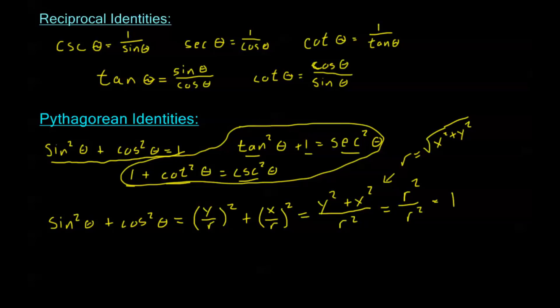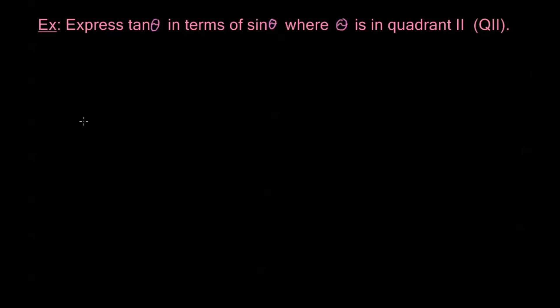Now how are we going to use these? Let's take a look at a couple of examples. Express tangent theta in terms of sine theta, where theta is in quadrant 2. We can use our Pythagorean identities. Note that cosine squared of theta equals 1 minus sine squared of theta — taking the first Pythagorean identity and subtracting sine squared from both sides.